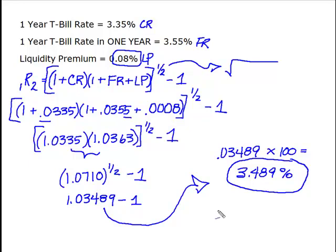...that the liquidity premium for a two-year investment, 0.08%, tells me that my rate should really be 3.489% to compensate me for a year at 3.35%, when I know that a year from now, it's going to be 3.55%.